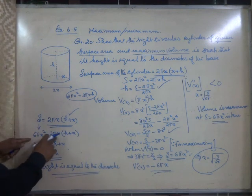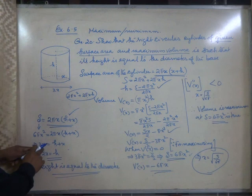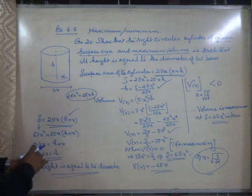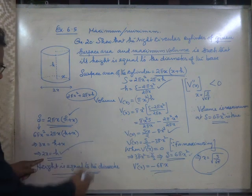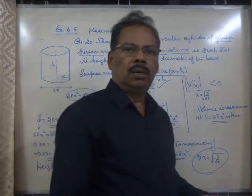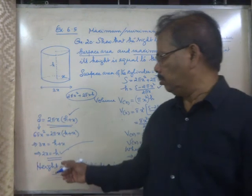Dividing by 2πx, on the left it will be 3x, and on the right it will be h plus x. Taking this x to the left, 3x minus x, that is 2x, equals h. What does it mean? 2x means diameter. Diameter is equal to height.